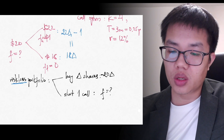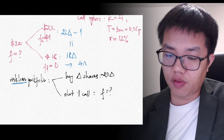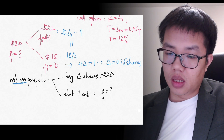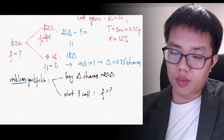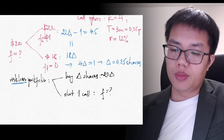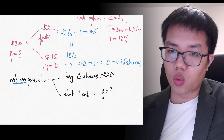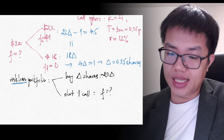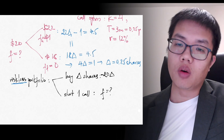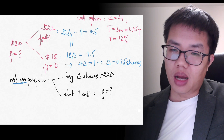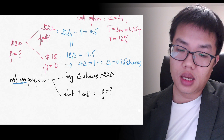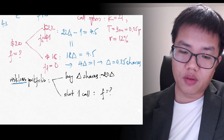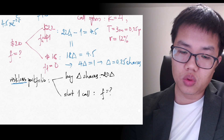Setting 22Δ − 1 = 18Δ gives us 4Δ = 1, so Δ = 0.25 shares. With Δ = 0.25, if the stock goes up the portfolio value is 22 × 0.25 − 1 = 4.5, and if the stock goes down it is 18 × 0.25 = 4.5. Three months later the portfolio is worth 4.5 in both scenarios. To find today's value, we discount: 4.5 × e^(−0.12 × 0.25).